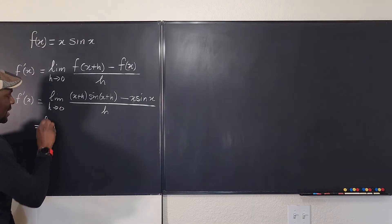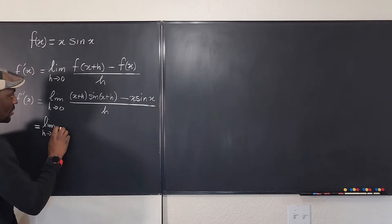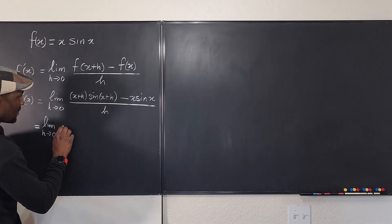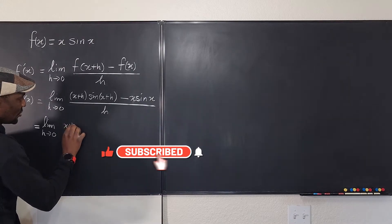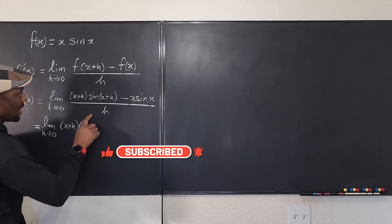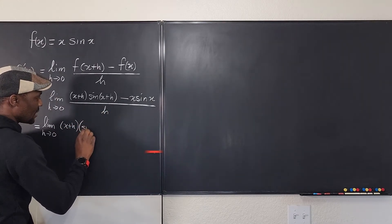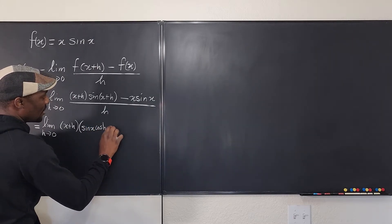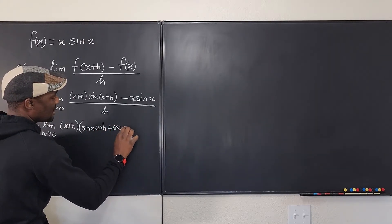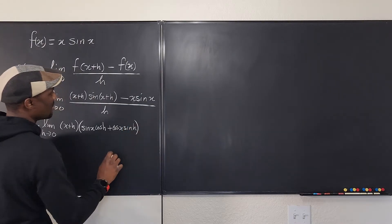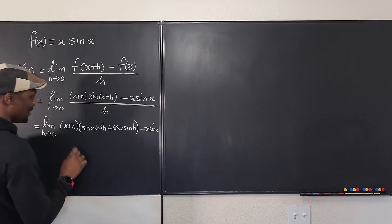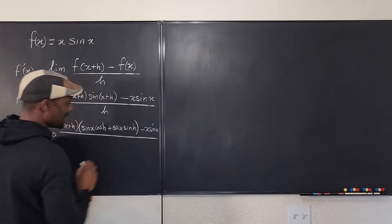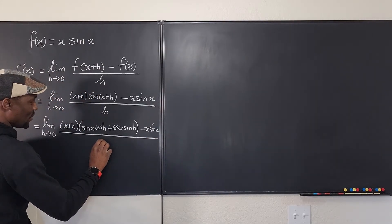our next line is going to be the limit as h goes to zero of, let's see how this writes out. It writes out as x plus h multiplied by, this is now going to be sin x cos h plus cos x sin h minus x sin x. I'm just going to squeeze it that way and then you have your h here.